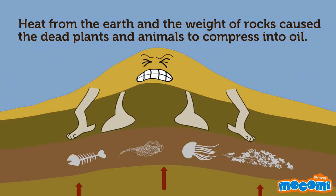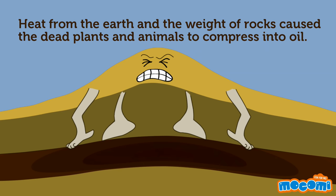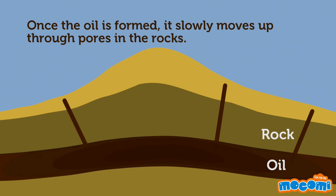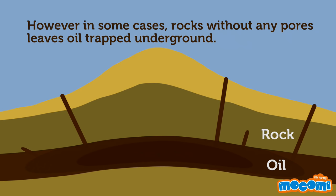Heat from the earth and the weight of the rocks caused the dead plants and animals to compress into oil. Once the oil is formed, it slowly moves up through pores in the rocks. However, in some cases, rocks without any pores leave oil trapped underground.